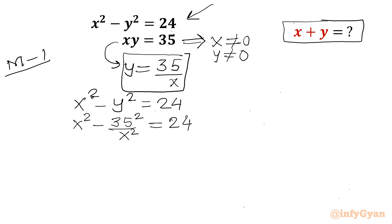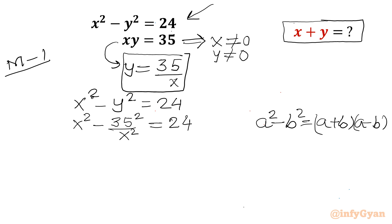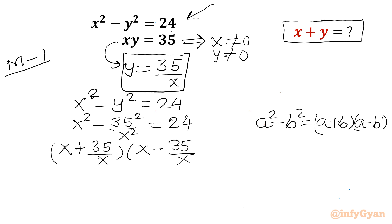Now using the a squared minus b squared identity, I can write a plus b times a minus b. Applying this: x plus 35 over x, times x minus 35 over x, equals 24.